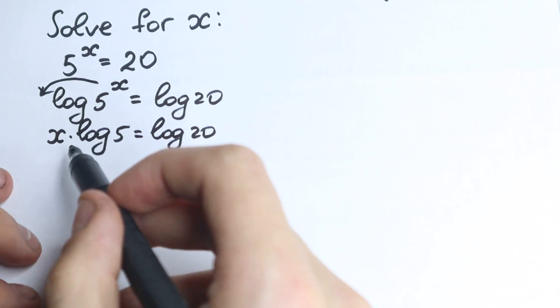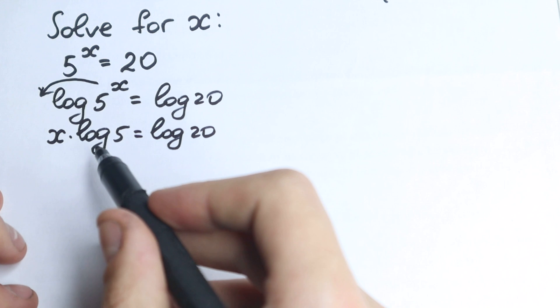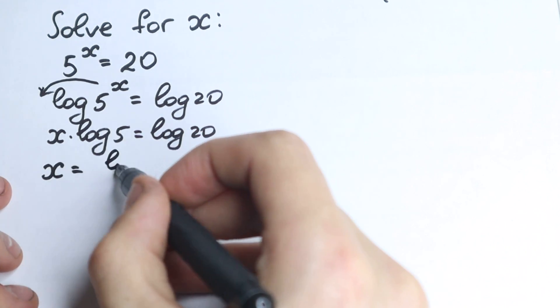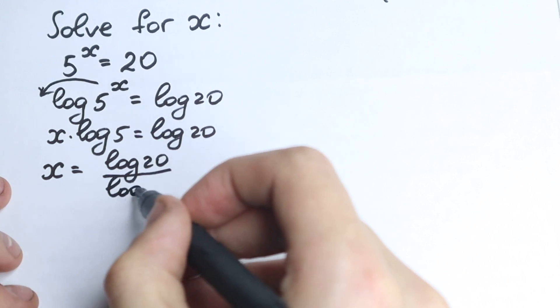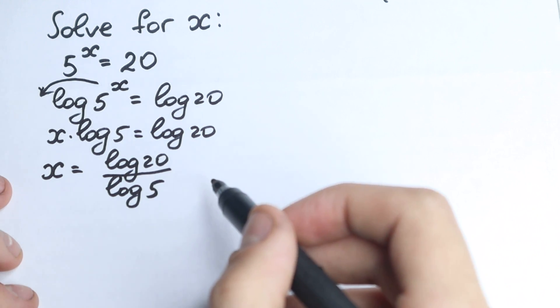And we can easily find our x because we can divide both sides by log 5, and we have as a result x equals log 20 over log 5. But this is a very bad answer because we can simplify this a little bit, and let's do this right now.